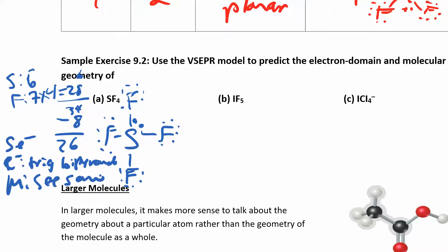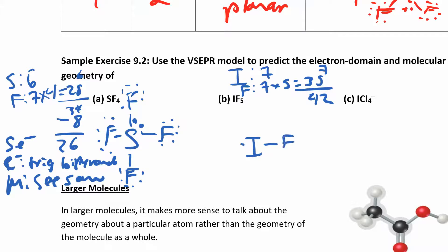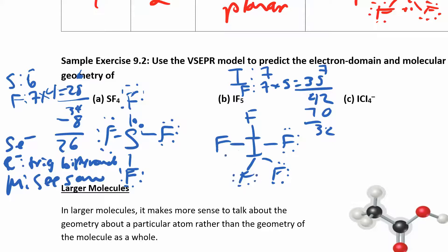We can do the same thing for IF5. Iodine and fluorine are both halogens, so iodine has seven valence electrons and fluorine has seven. I have five fluorines, so that's 35, and seven gives me 42 electrons total. I put iodine in the middle and five fluorines on the outside. After distributing electrons for the ten bonds and filling octets, I have two left over. So I have a total of six electron domains. The electron domain geometry is octahedral, and the molecular geometry is square pyramid.